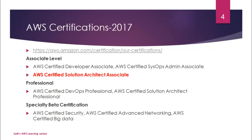AWS certifications have three tiers. The first is the associate level, which has no prerequisites — you just need to be familiar with the concepts. There are three associate certifications: AWS certified developer associate, AWS certified SysOps admin associate, and AWS certified solution architect associate, which is what this series focuses on. At the professional tier, there are two certifications: DevOps professional and solution architect professional. To attend the solution architect professional exam, you must first be a certified solution architect associate. For the DevOps professional, you need to pass either the developer associate or SysOps admin associate exam.